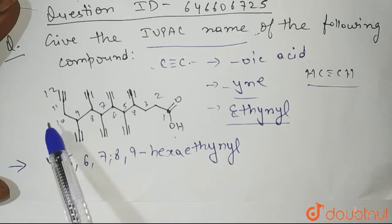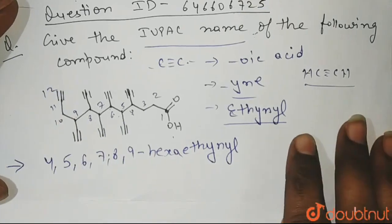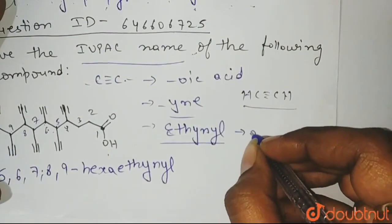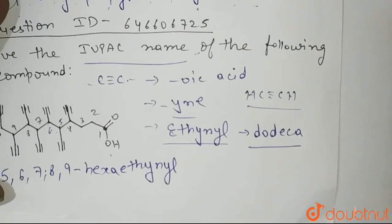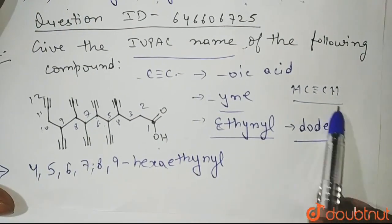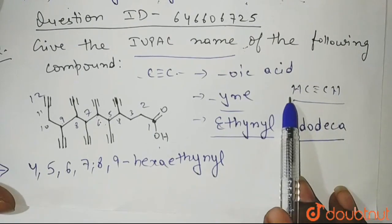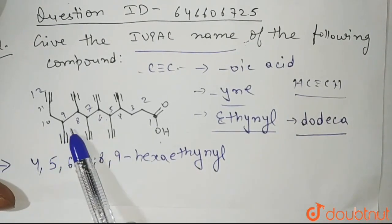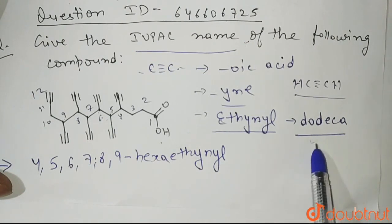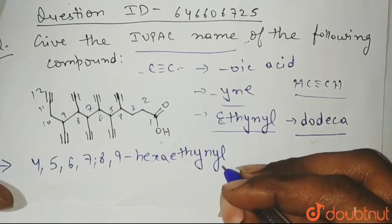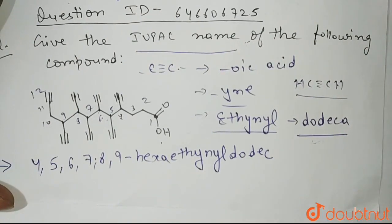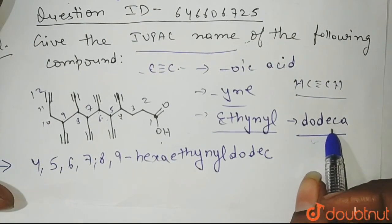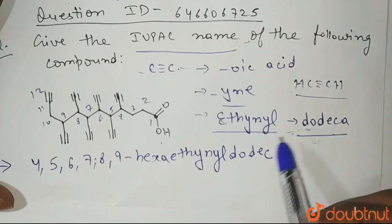Now the substituents are done. Now the main parent chain has how many? 12. So for 12, the term we use is dodeca. So we will write dodeca here. First of all, we write dodeca. Deca means 10, dodeca means 12.